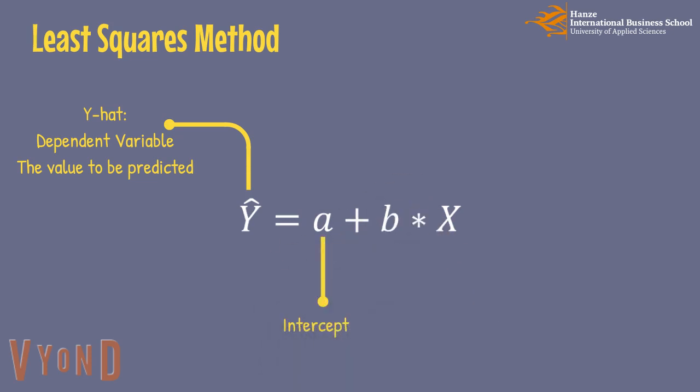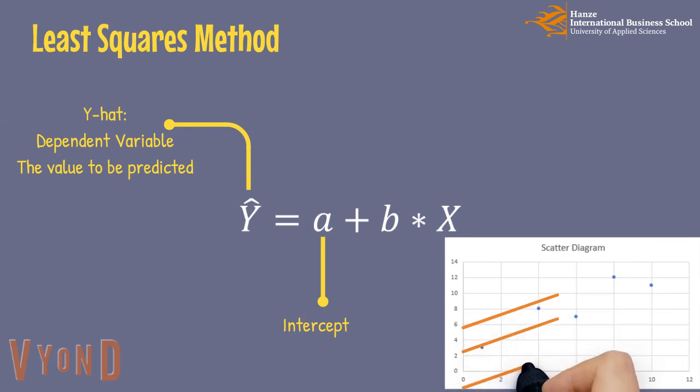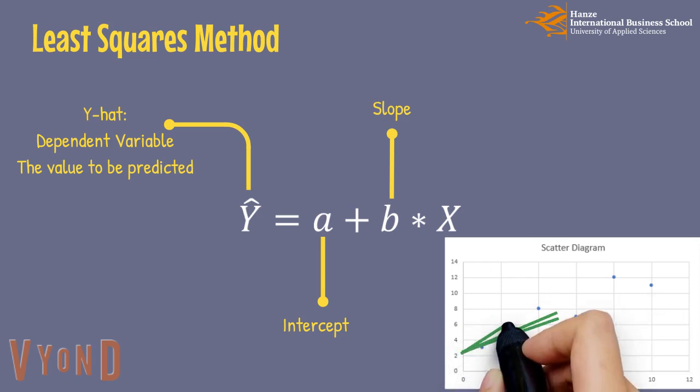A is the intercept. It decides from where our line should start. B is the slope. It determines how steep our line should be.